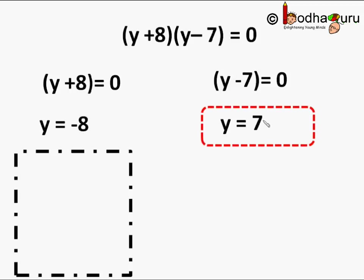It cannot be, minus 8 cannot be the value. Width of the room should be y equal to 7 meters.